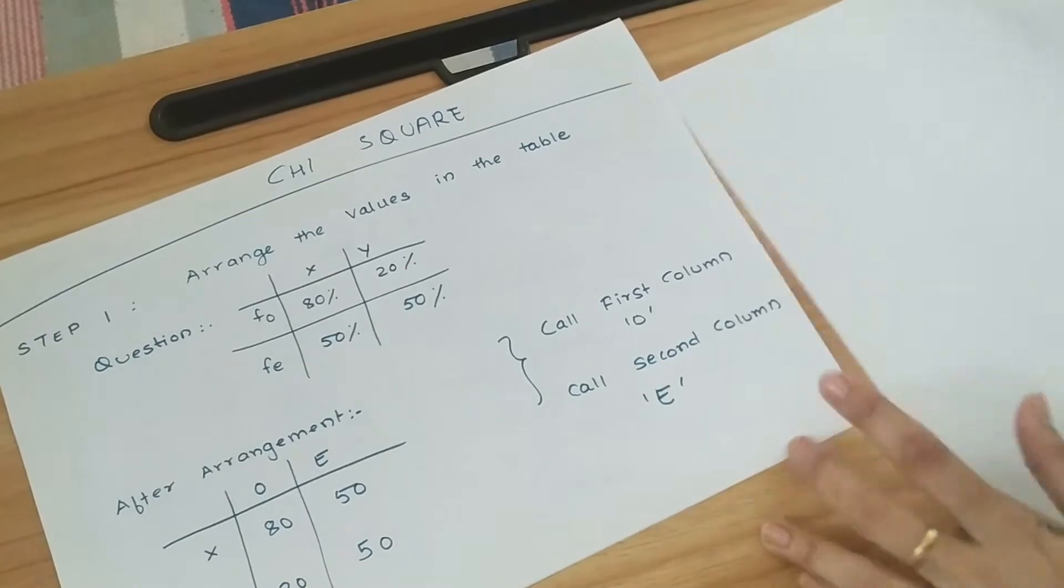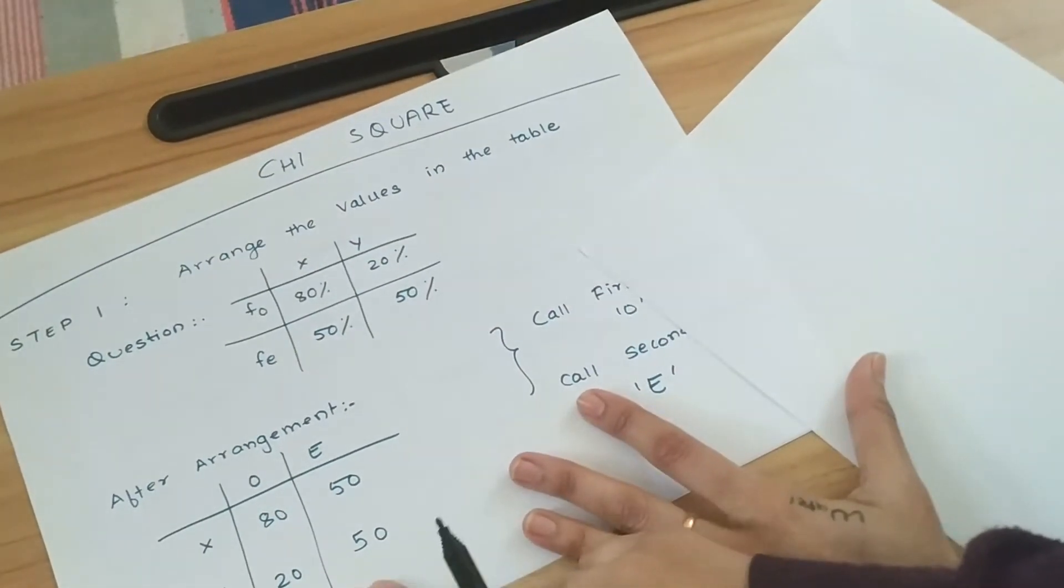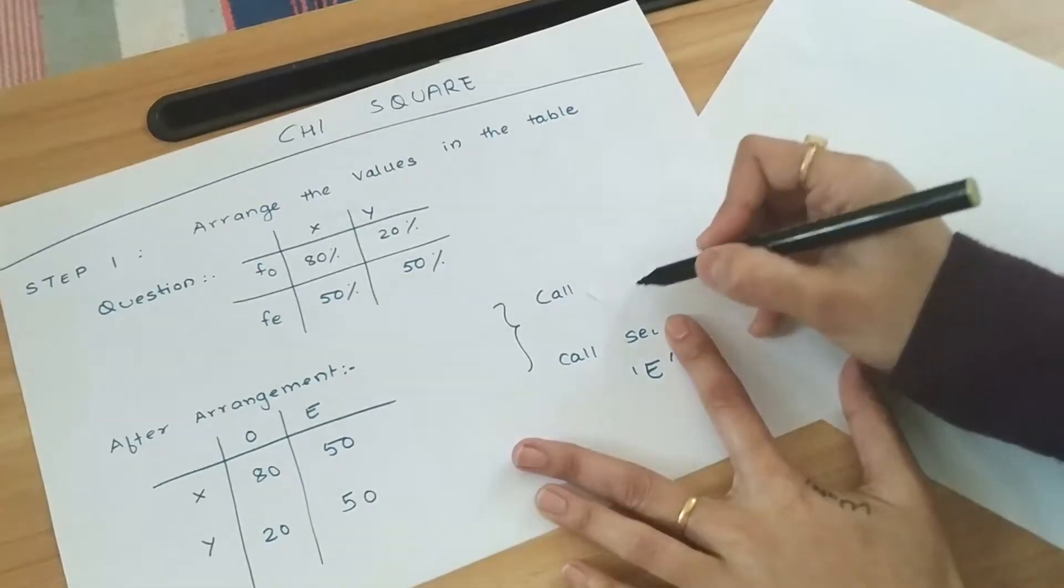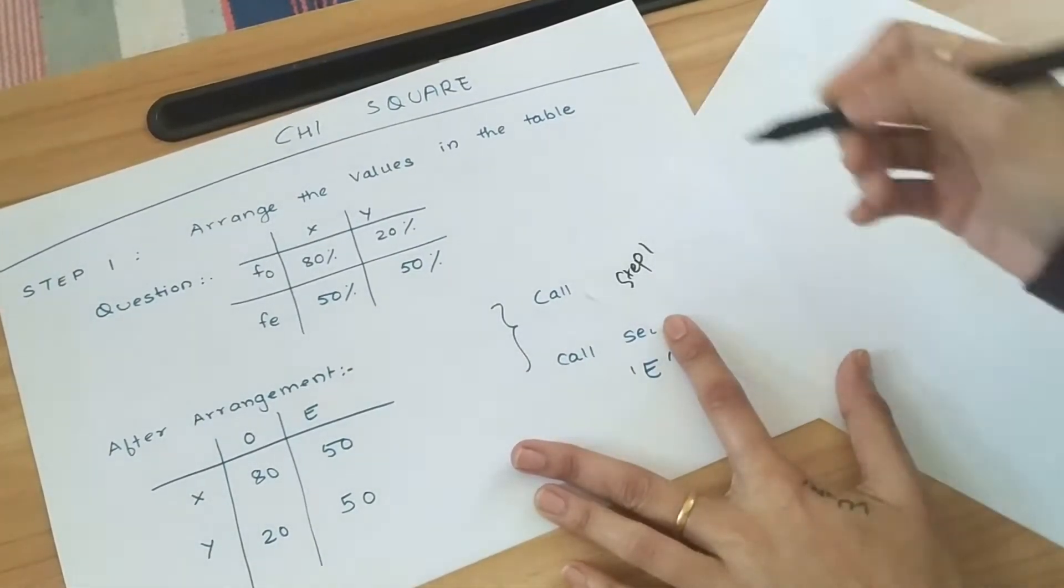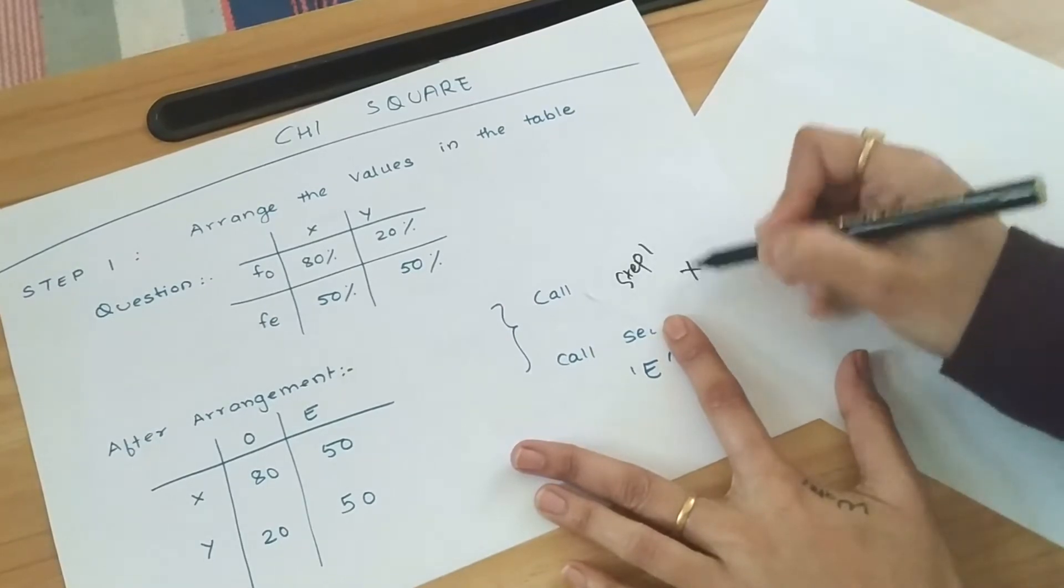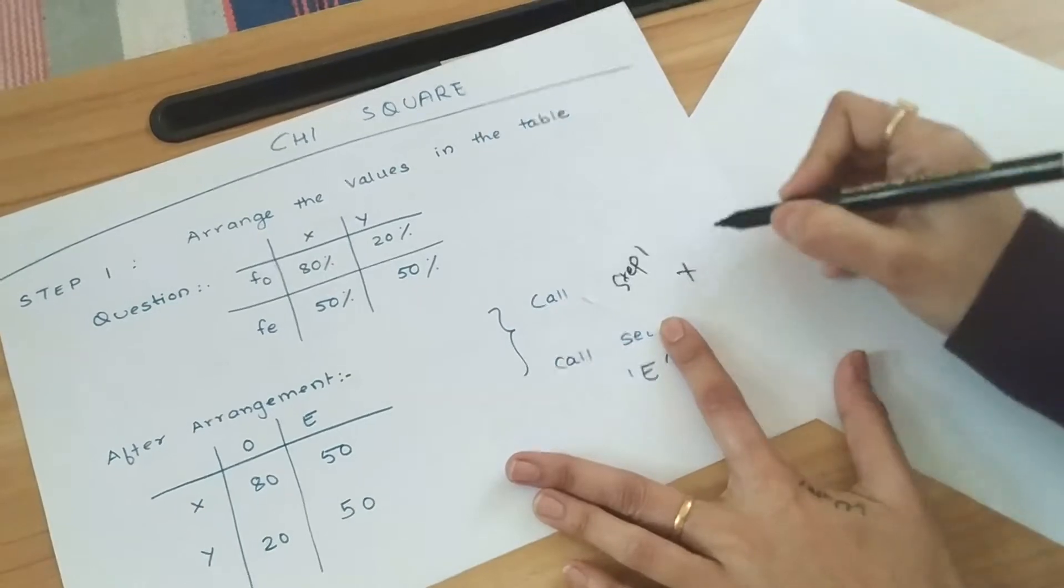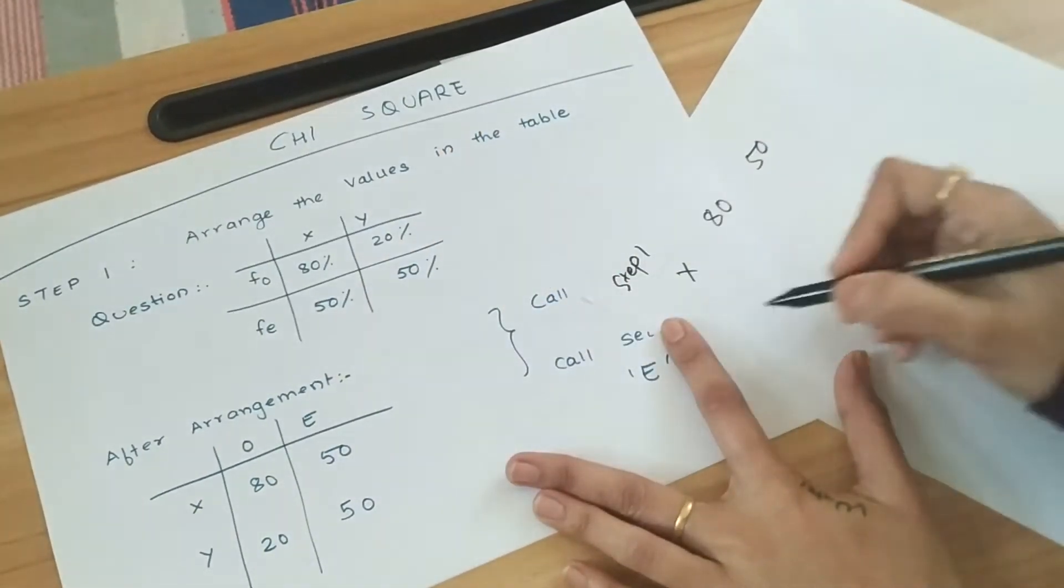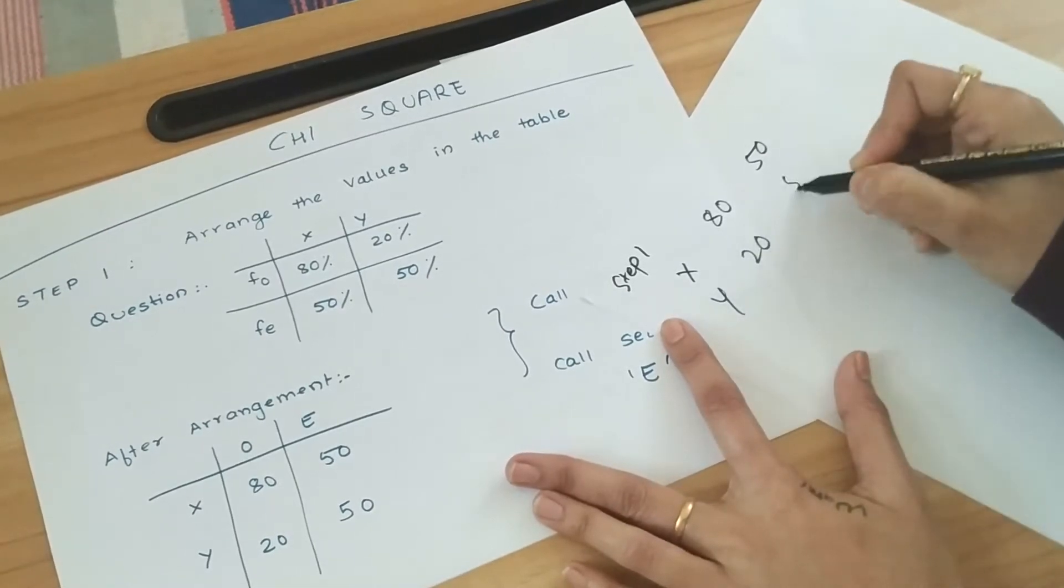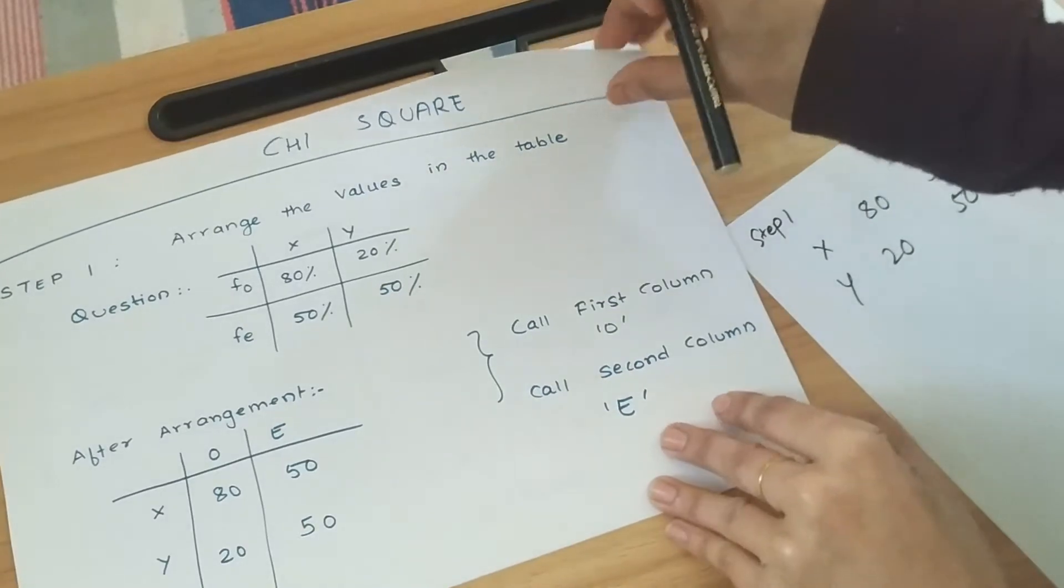The chi-square problem is very simple. This is the question given to you. We have to arrange the elements. This is step one, so we just rearrange it. X goes here in the column, and this goes row-wise: 80, 50, and Y is 20, 50. You can see here this is the first step.